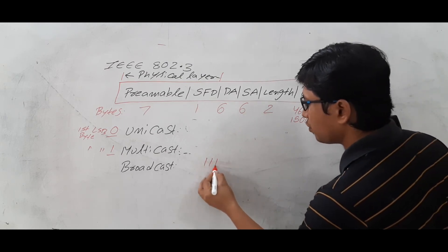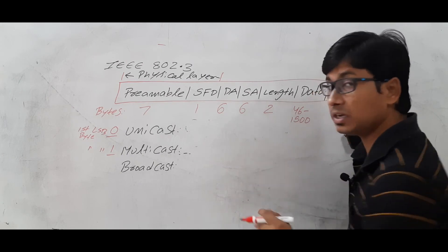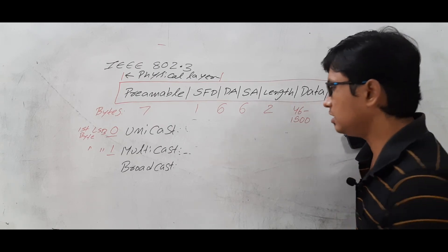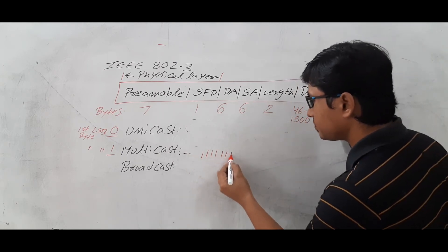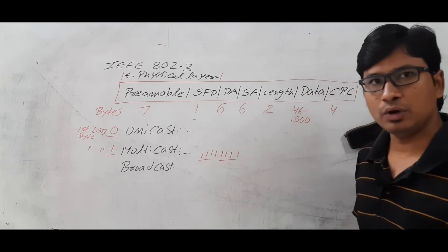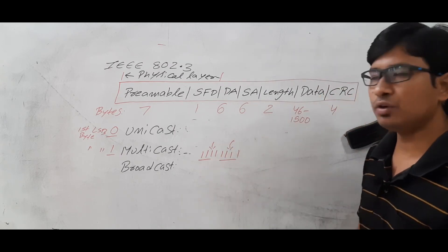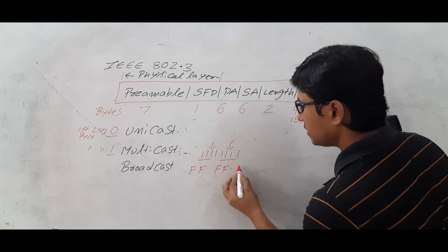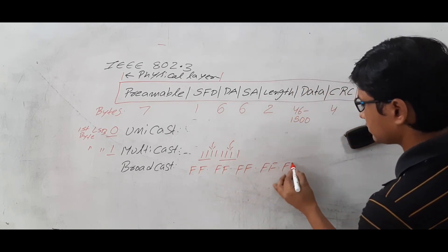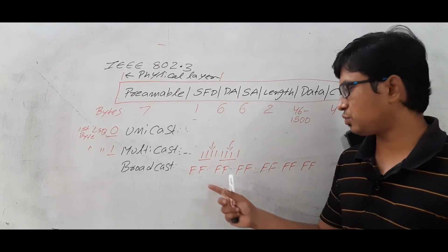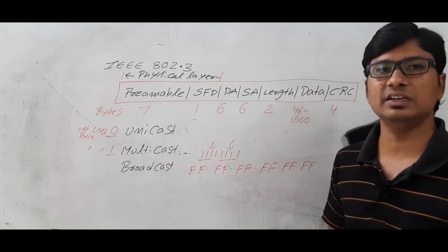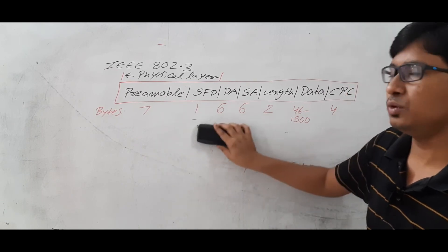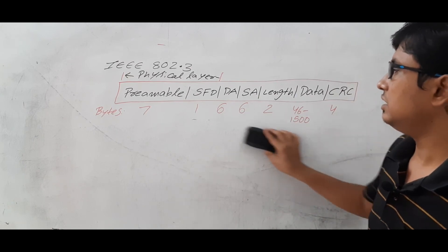All the bits being 1s means: if you have four 1s that equals 15, which in hexadecimal is represented as F. Since it is represented as dotted hexadecimal and all 48 bits should be 1s, each byte will have two hexadecimal digits — both F. So all Fs in the broadcast address. If you have all 48 bits as 1s, or it consists of all Fs, then it is a broadcast address.